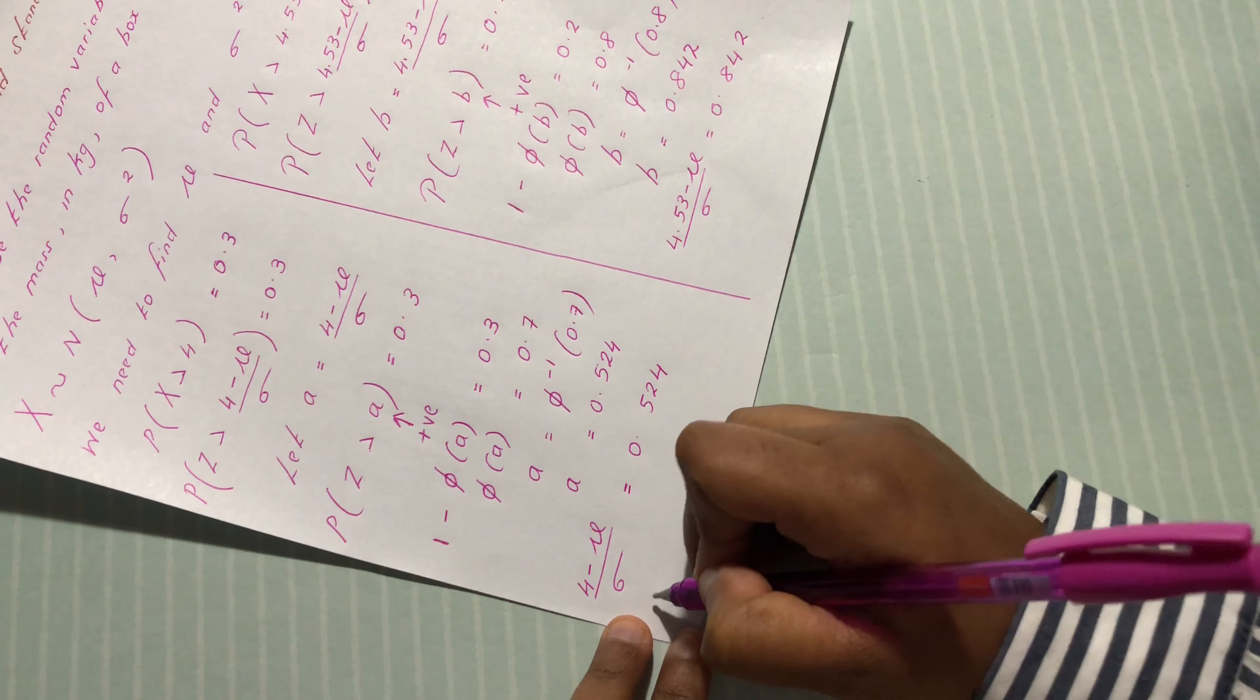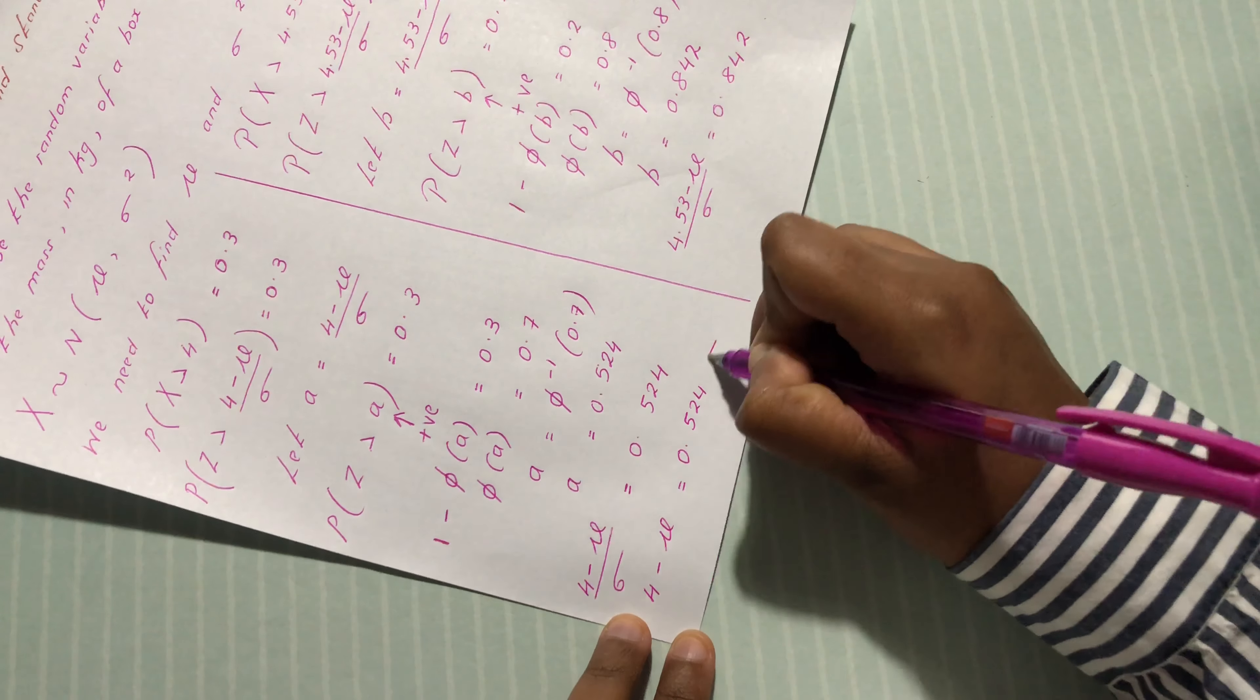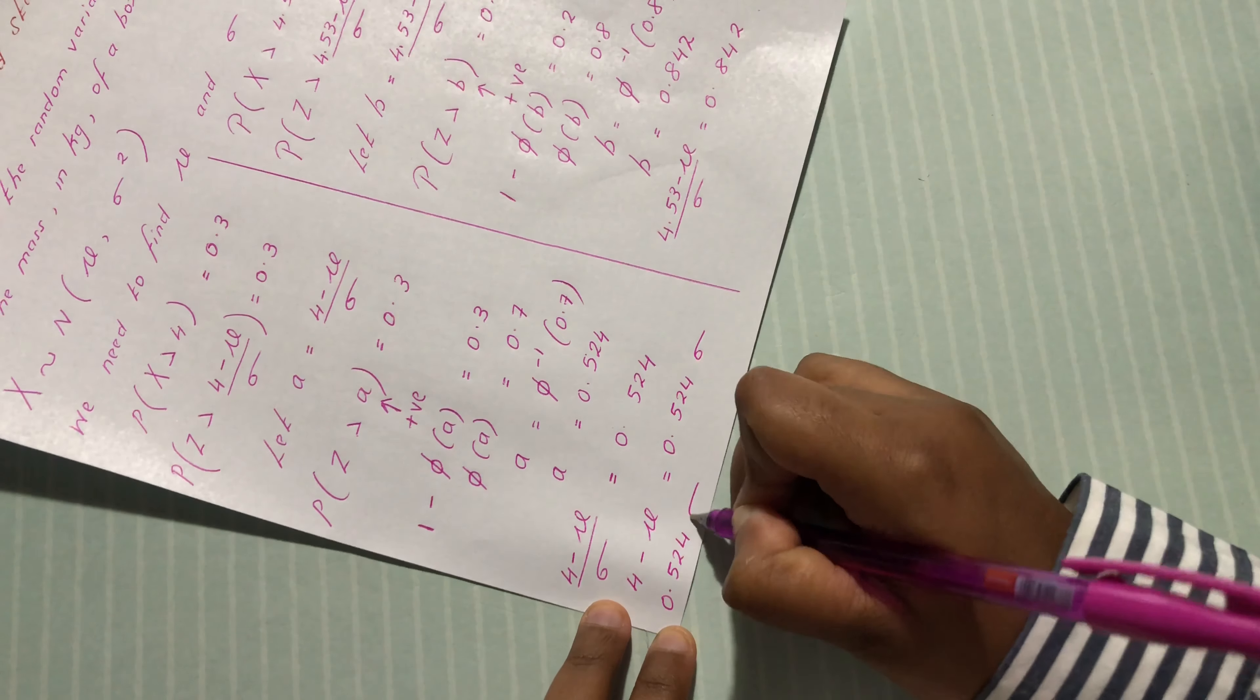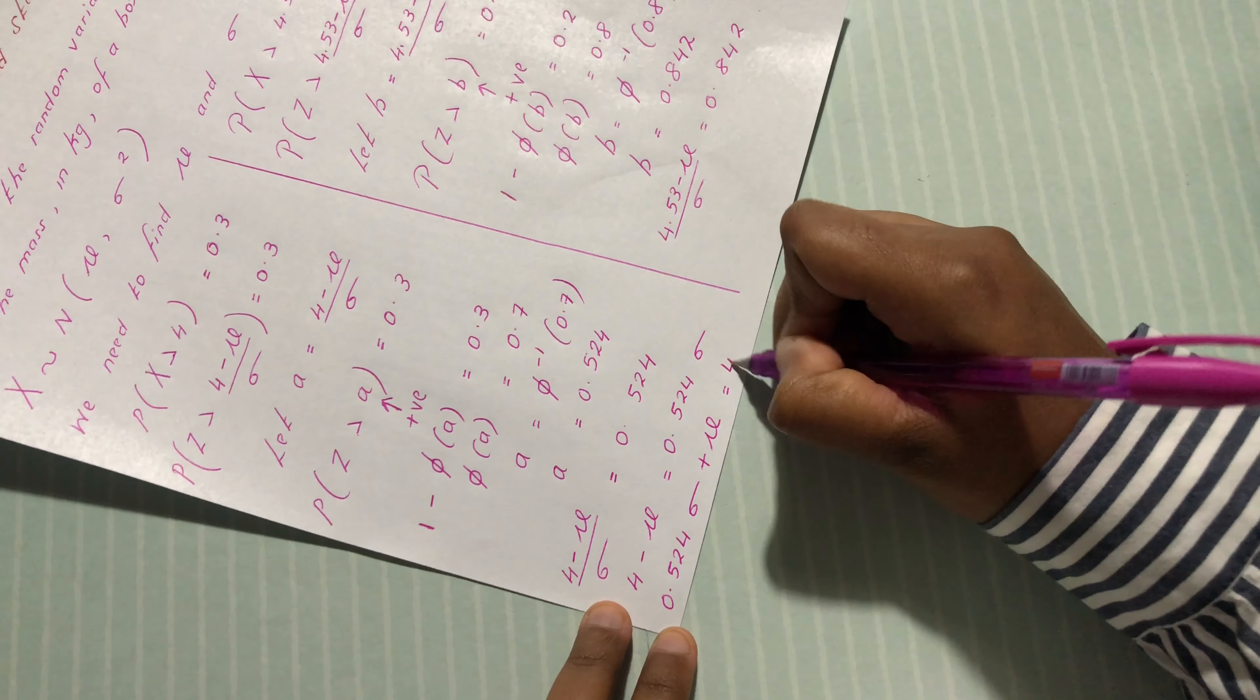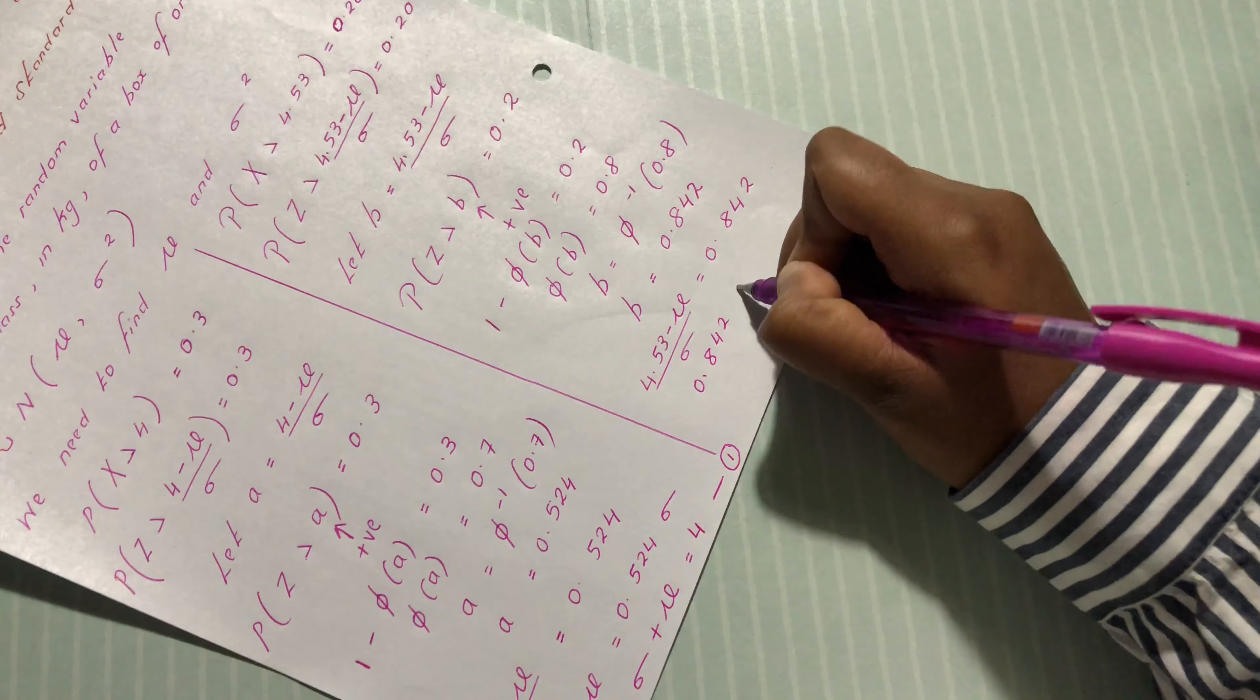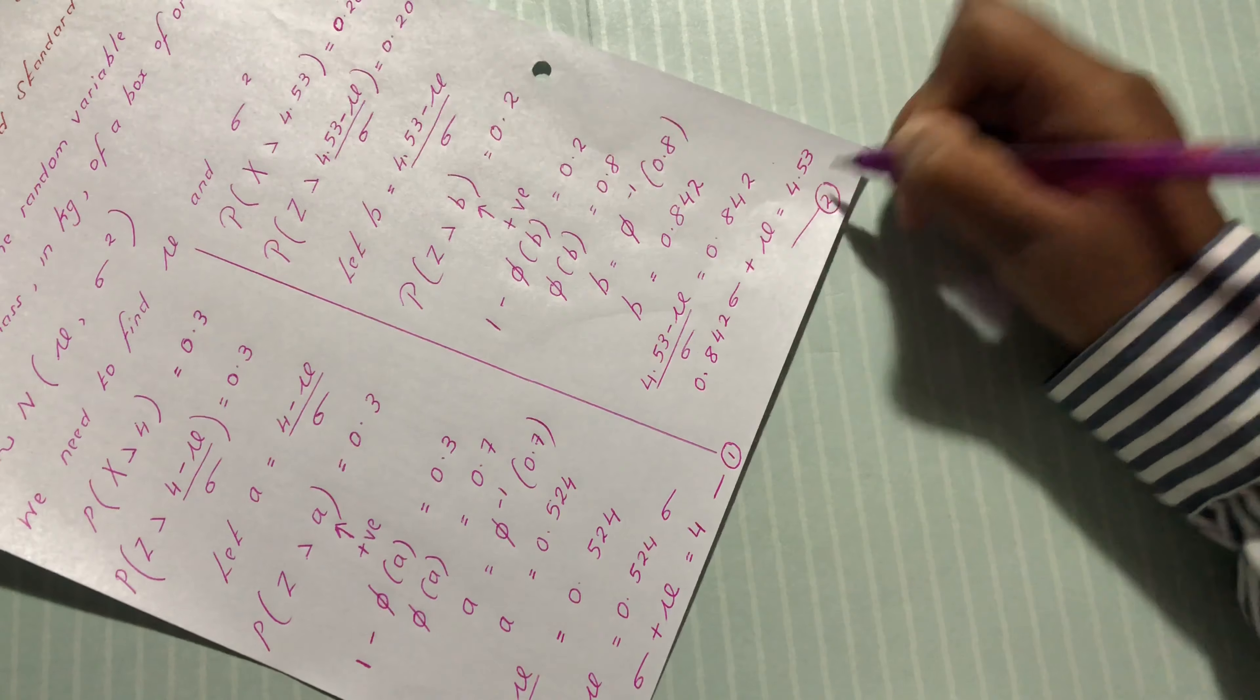We simplify this equation. 4 minus mu equals 0.524 sigma. Let's group the mu and sigma together. We have 0.524 sigma plus mu equals 4. We have a first equation. And 0.842 sigma plus mu equals 4.53. We have a second equation.